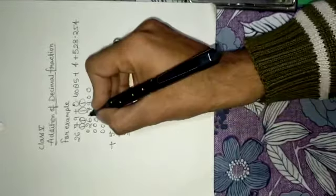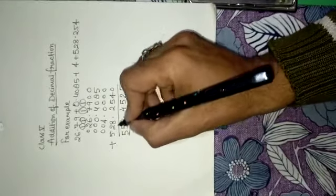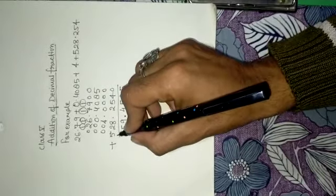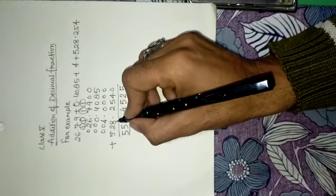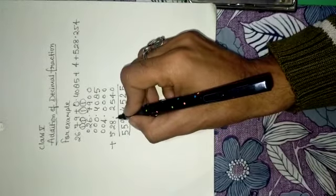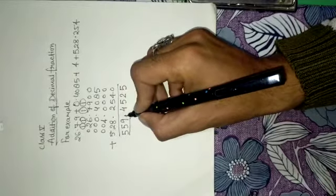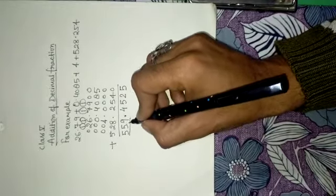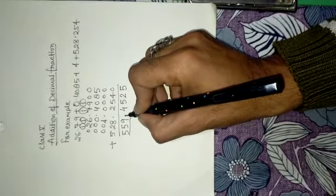And you have to put decimals where it was in the larger decimal fraction. Like, after 3 numbers from left to right, here also you have to put from left to right after 3 digits.